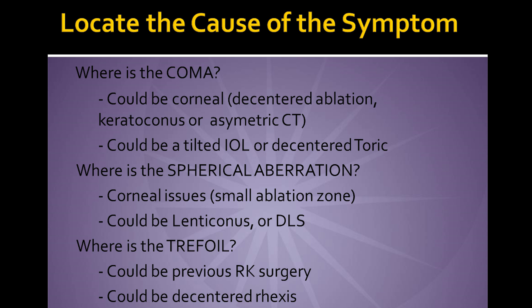If it's from the lens, coma could be from a misaligned toric lens, de-centered, or could be from a tilted lens. Spherical aberration, which causes night myopia and other things, could be from a combination of either the cornea or the internal optics. If spherical aberration is on the cornea, sometimes it's from too small of an ablation.